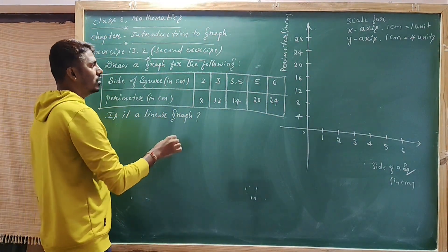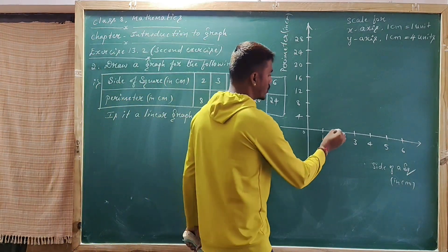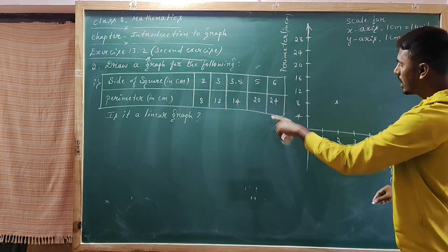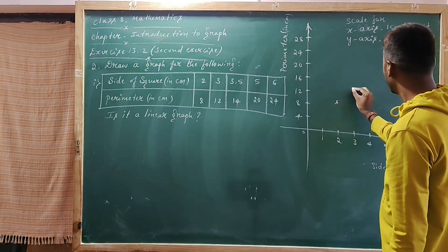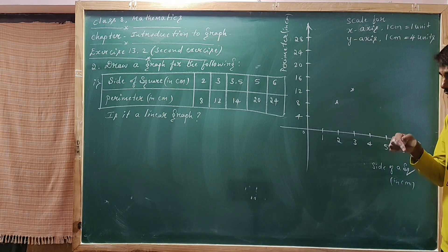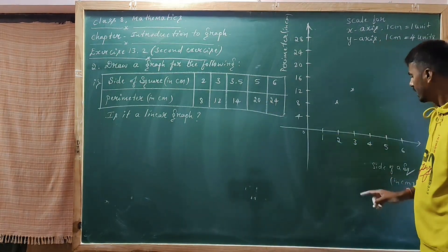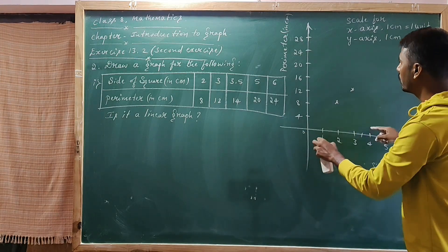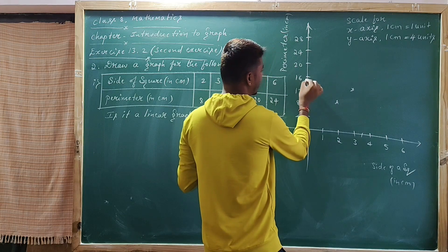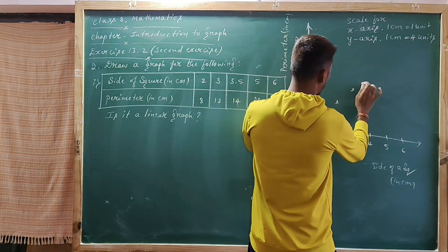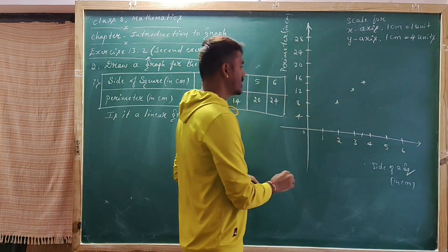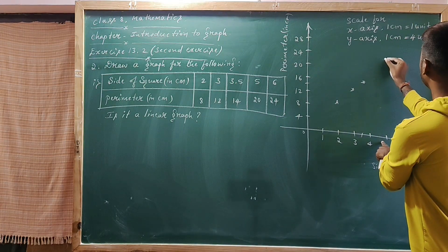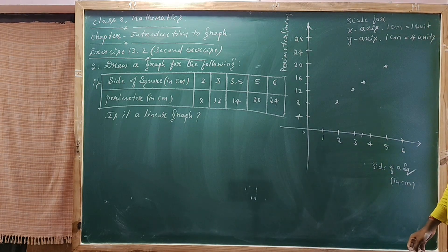Represent the side of the square on the x-axis. Choose scale: x-axis 1 cm equals 1 unit; y-axis 1 cm equals 4 units — so the perimeter values go 4, 8, 12, 16, 20, 24, 28. Coordinate points: (2, 8), (3, 12), (3.5, 14), (5, 20), (6, 24).